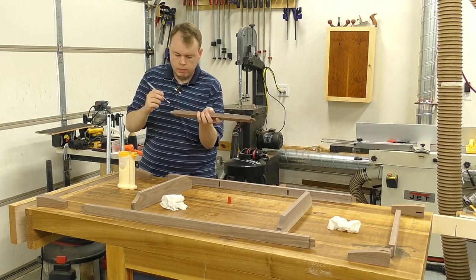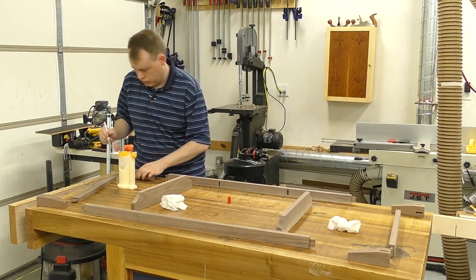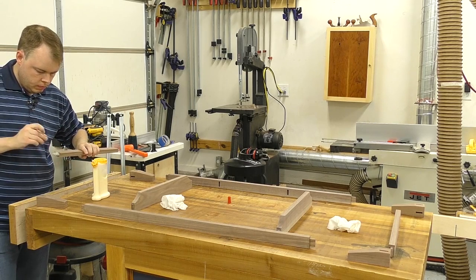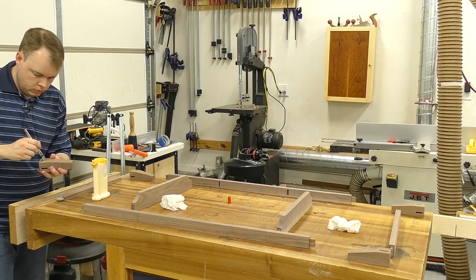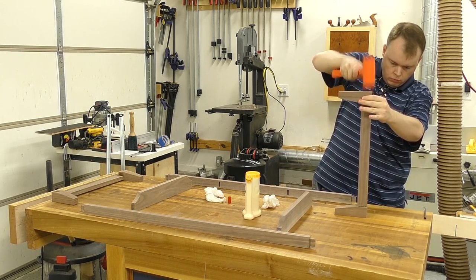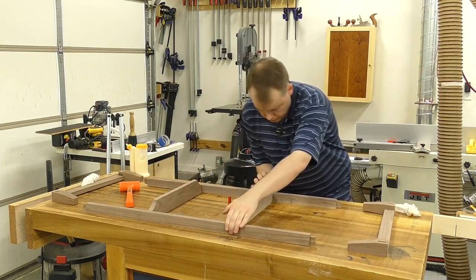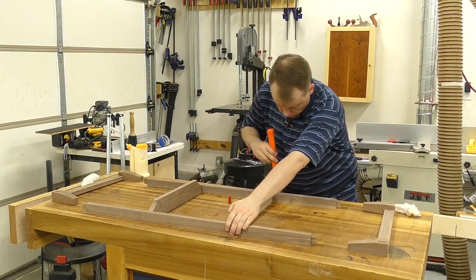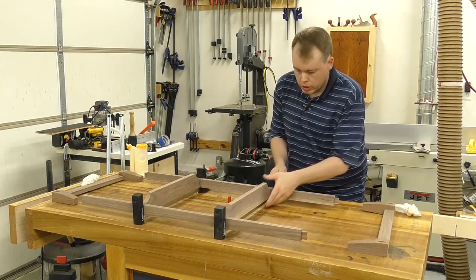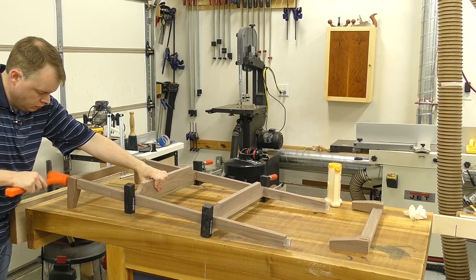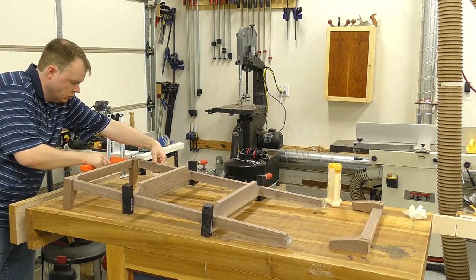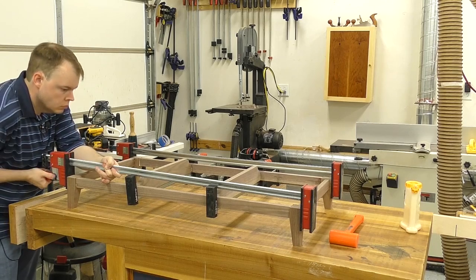Before gluing the base up, I did sand it to 150 grit and I stopped at 150 because I'm going to be applying a dye. I started by gluing up the feed assemblies. Next, I glued the riser blocks to the side aprons and went ahead and put those in the clamps. And then finally, I brought the three pieces together, gluing on the feed assemblies to the aprons.